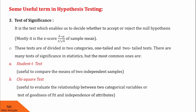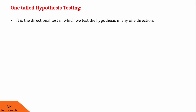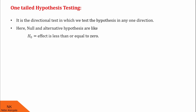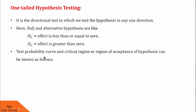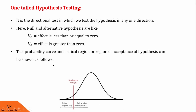Now let us see what is meant by one-tailed and two-tailed tests. First, one-tailed test. It is the directional test in which we test the hypothesis in any one direction. Here, null and alternative hypothesis are like: H0 is effect is less than or equal to 0, then HA will be effect is greater than 0. You can see HA is only one directional. The test probability curve and critical region or region of acceptance of the hypothesis can be shown as follows. Here you can see there is only one region where we can reject the null hypothesis.